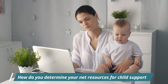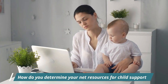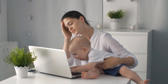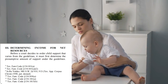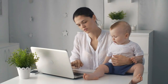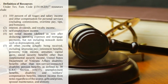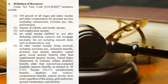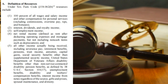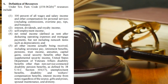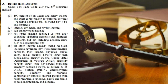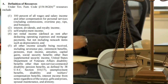How do you determine your net resources for child support? The definition given to us by the Texas Family Code looks at your monthly resources, which includes 100 percent of all wages and salaries, income, and other compensation for personal services — including commissions, overtime pay, tips, and bonuses — interest, dividends, and royalty income, self-employment income, and net rental income defined as rent after deducting operating expenses and mortgage payments but not including non-cash items such as depreciation.